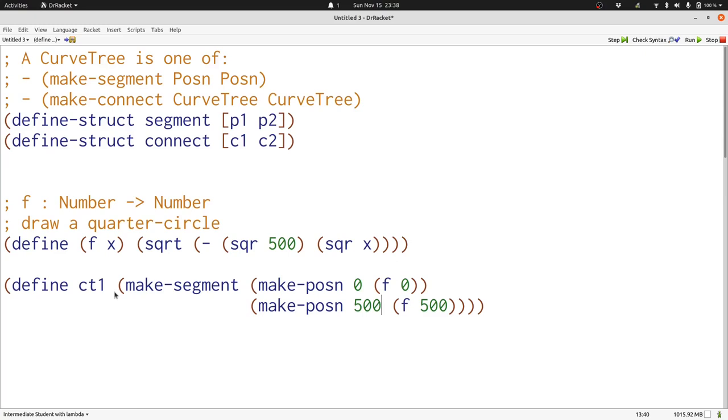Here's our first curve tree. It's just a single segment between the point 0 and f of 0 and 500 and f of 500. That's a very poor approximation of what f looks like over the range from 0 to 500, but it's a start.